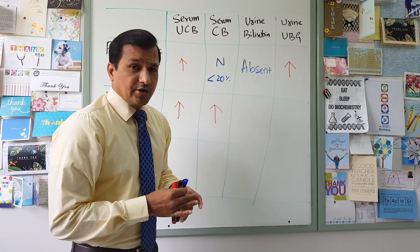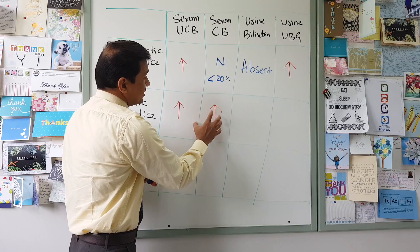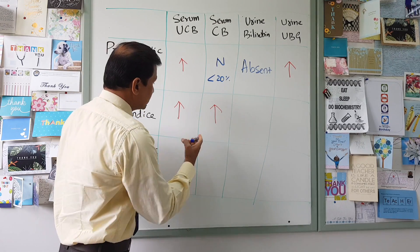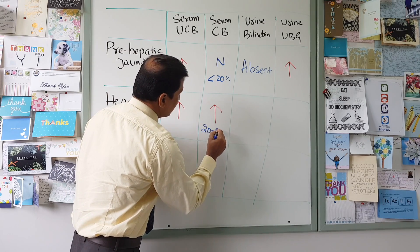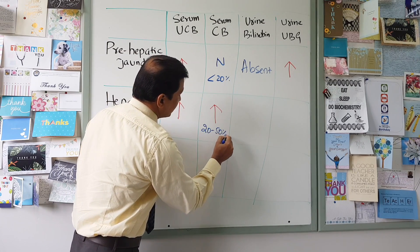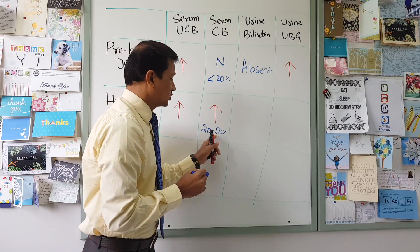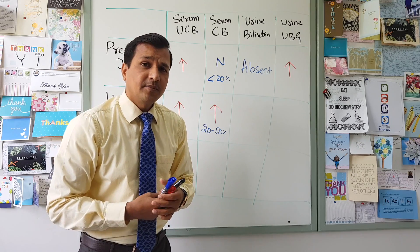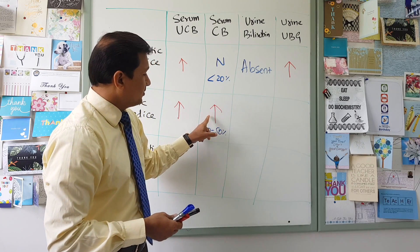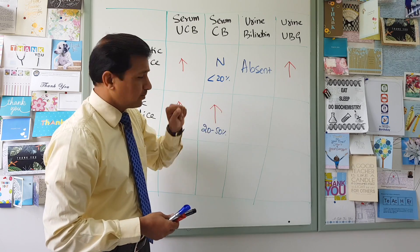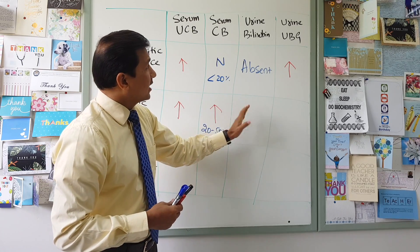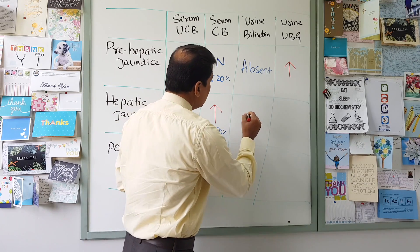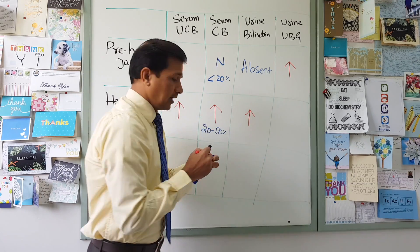What happens to urine bilirubin in hepatic jaundice depends on how much the conjugated bilirubin is elevated. Normally in hepatic jaundice, conjugated bilirubin contributes 20 to 50% of the total bilirubin, which clearly exceeds the renal threshold for bilirubin. Since this conjugated bilirubin is water-soluble and exceeds the 20% mark, it can appear in the urine. That is why you will see presence of urine bilirubin in hepatic jaundice.